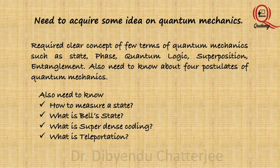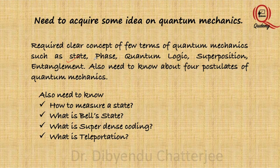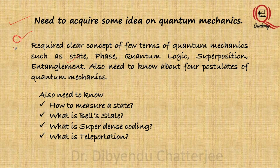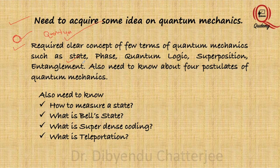Along with the mathematical concepts, you also need to acquire some idea of quantum mechanics. To understand this lecture series, you need a clear concept of a few terms of quantum mechanics, such as state — that is, quantum state. State is the situation of an isolated particle. For example, suppose the color of a ball is red and it changes to green: red is one state and green is another state. In quantum mechanics, states are energy states; if energy changes, the state changes.